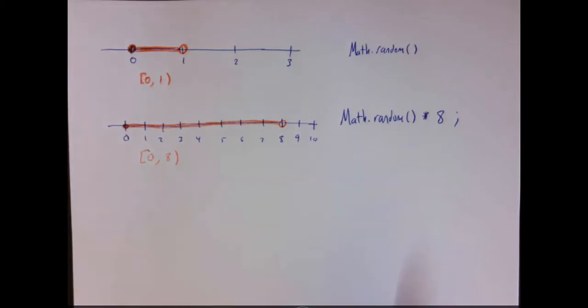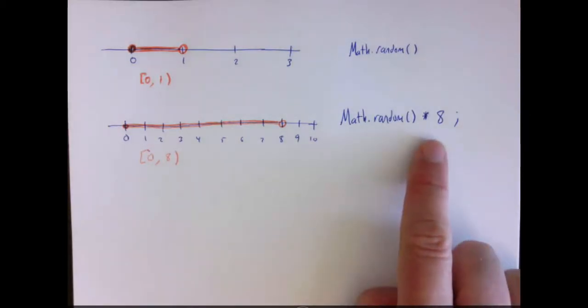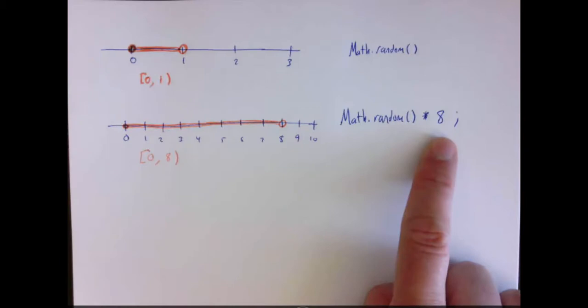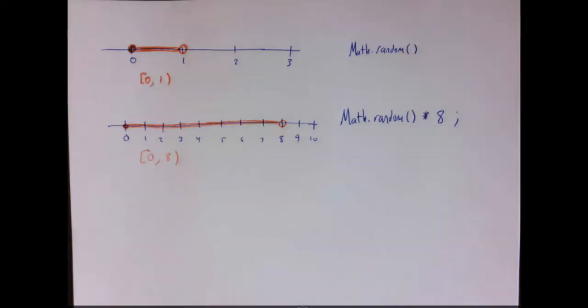If you multiply by a value on the outside here, that's the same thing as scaling the interval or stretching the interval. So it's a transformation just like in math class that you've learned. So if the original interval is between 0 and 1, and I multiply by 8, I've now scaled that interval by stretching it to be between 0 and 8.